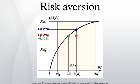For risk-averse individuals, the risk premium becomes positive; for risk-neutral persons it is zero; and for risk-loving individuals their risk premium becomes negative.